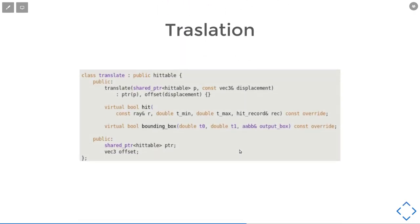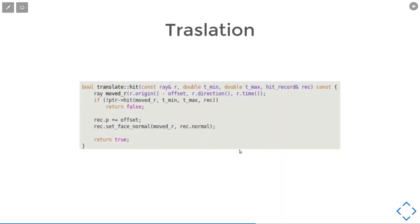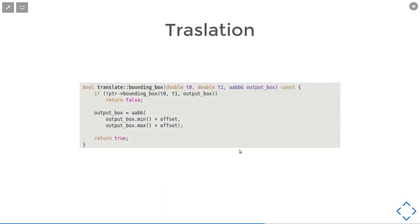If you think about it, for translation we just have a vector ray offset. For the hit function, we just move the ray in the opposite direction of the original offset, but after intersection calculation we need to offset back the intersection point. For the bounding box, we just add an offset to the original bounding box.